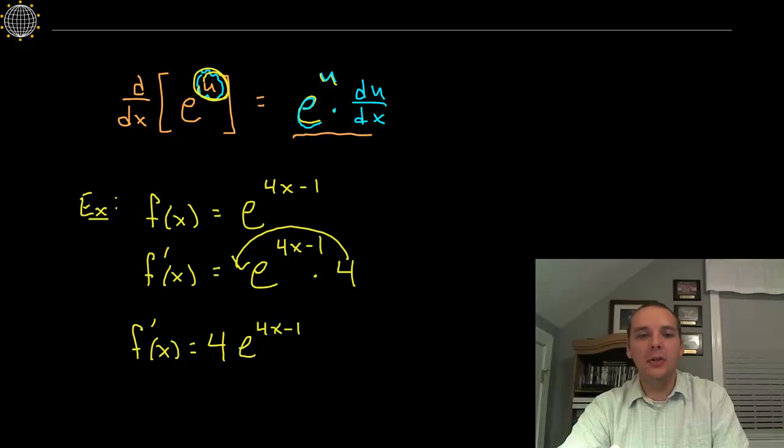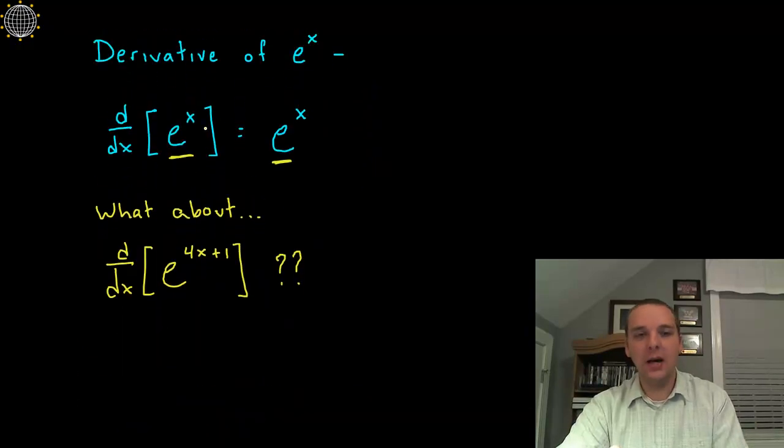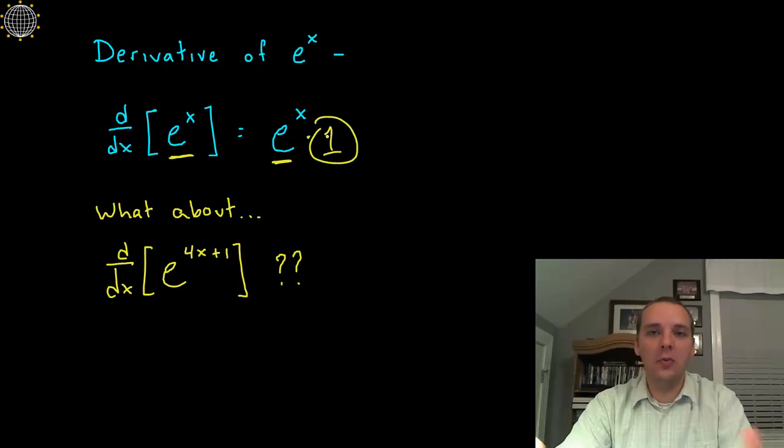Now is that something new and different than what we knew before? Absolutely not, no it's just an extension. The derivative for e to the x would be e to the x times, and what's the derivative of x? Well it's just 1. So really it was there all along, we just never wrote it just because it was a number 1.